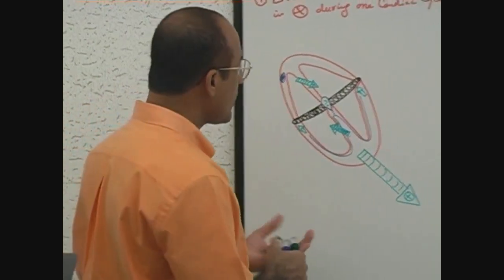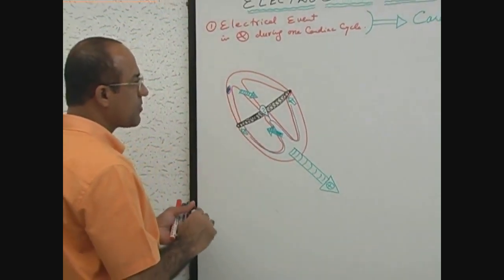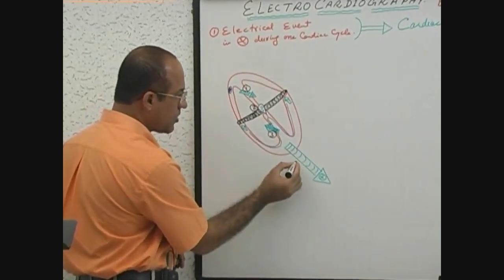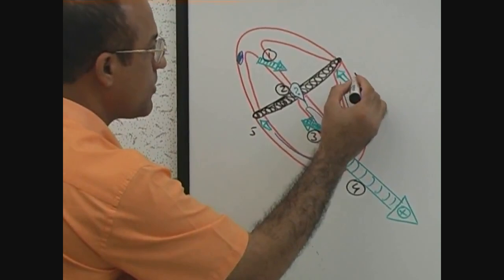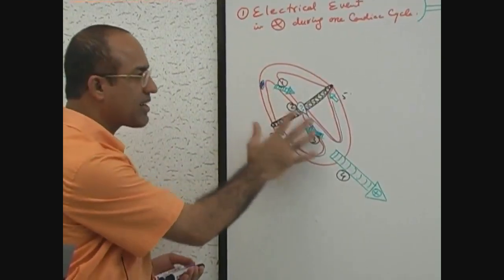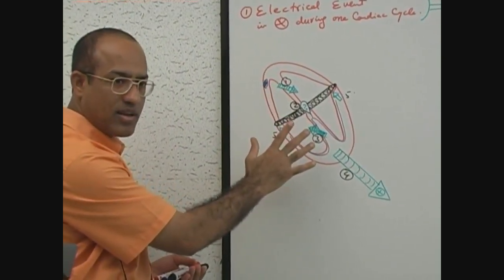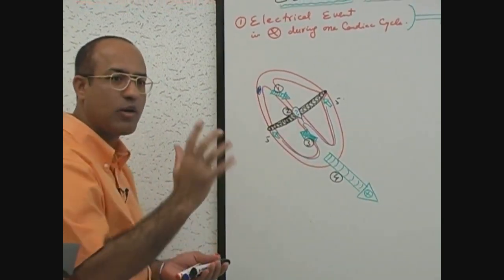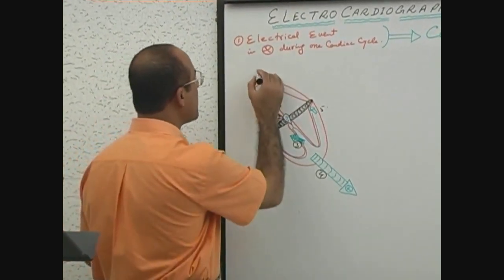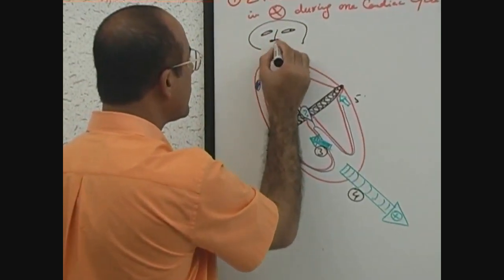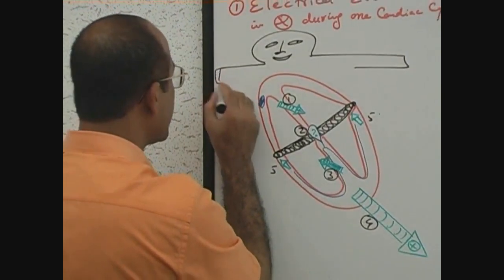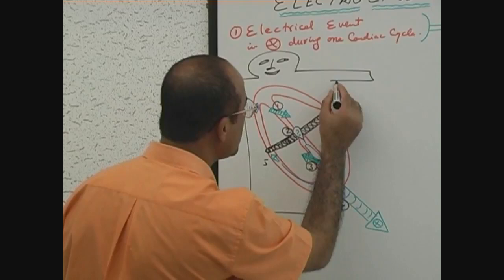Now let's suppose we go to the next stage — there are five electrical activities. We take these electrical vectors of this heart and apply a galvanometer. Here is a person who is very happy because he understands the ECG to some extent now.